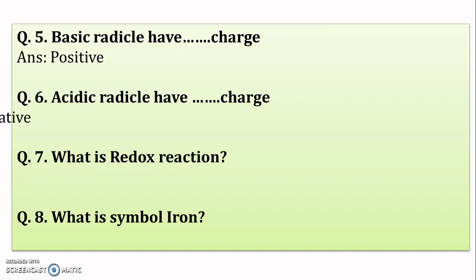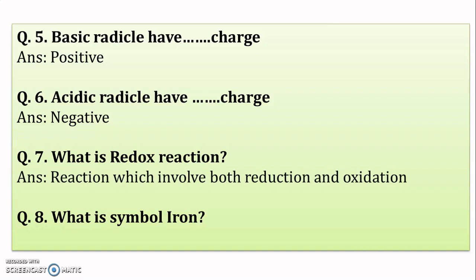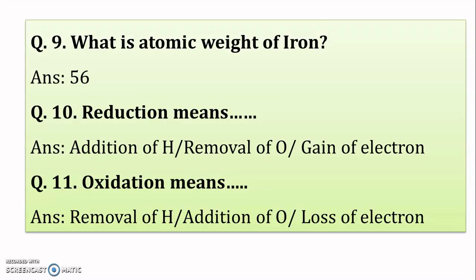Next: what is a redox reaction? A reaction which involves both reduction and oxidation is called a redox reaction. The symbol of iron is Fe. The atomic weight of iron is 56.